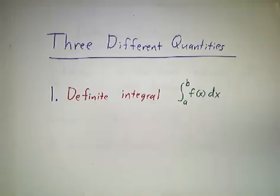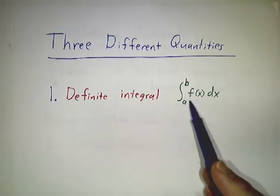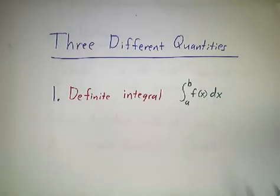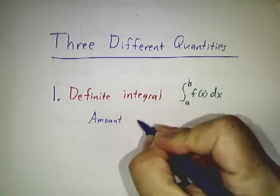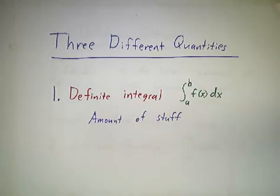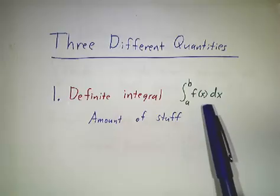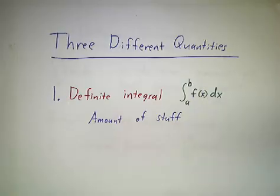So the first thing is the definite integral. The definite integral is the amount of stuff between a and b, and we're going to go into more detail on that. And the thing about this is it's a number, it's not a function, it's a number. The integral from 1 to 3 of 3x²dx is 26, that's a number.